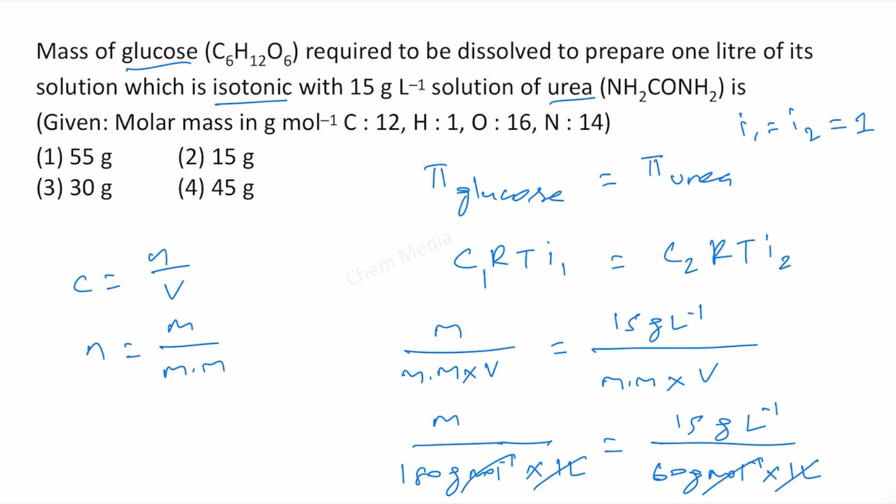So therefore let us cancel the common things first. This is 1 by 4 and let us cross multiply. Therefore mass is equal to 180 divided by 4 gram per liter, which is equal to 45 gram per liter. Therefore option 4 is correct.